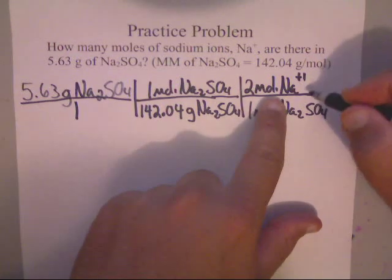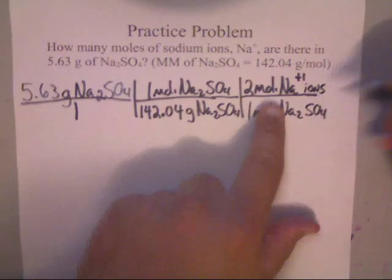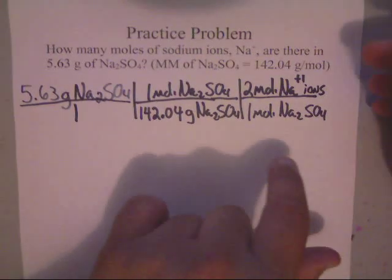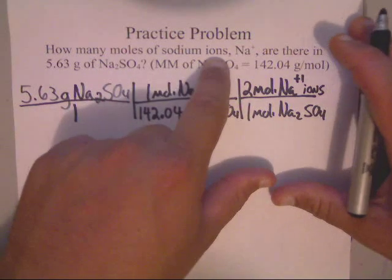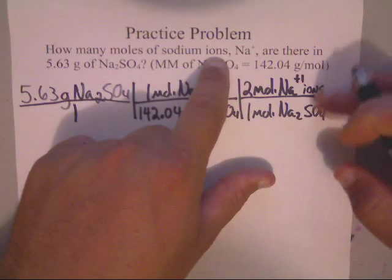So I've got 2 moles of Na⁺ ions. And I can actually stop there, because I've got everything that I need. Now, the only thing I'm going to add on there is ions. And I'm actually done, because I have calculated the number of moles of sodium ions.